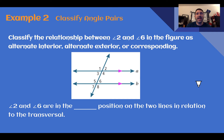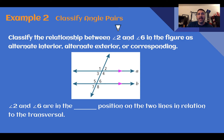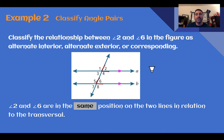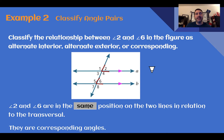Example two — classify angle pairs. Classify the relationship between angle two and angle six as alternate interior, alternate exterior, or corresponding. Let's find angle two and angle six. Angle two and angle six are in the same position in relation to the transversal, so these are corresponding angles — it's like you could take one angle, move it, and it fits perfectly on top of the other with no rotation.